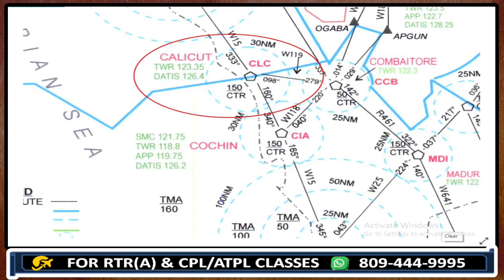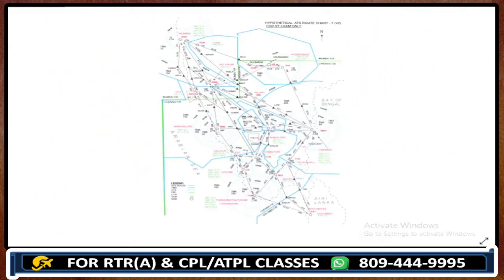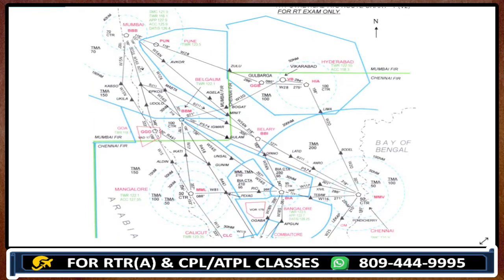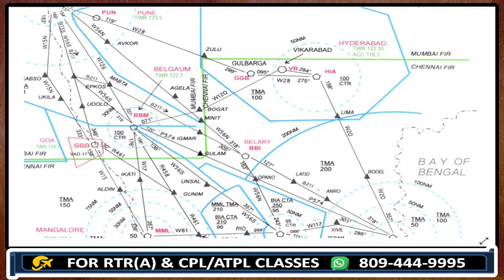I've given you enough examples covering each situation. If you still have any confusion, you can get back to me — I'm here to help. Now, what is a radial and how do you find it? Look over here: these degrees shown from Hyderabad are the radials.